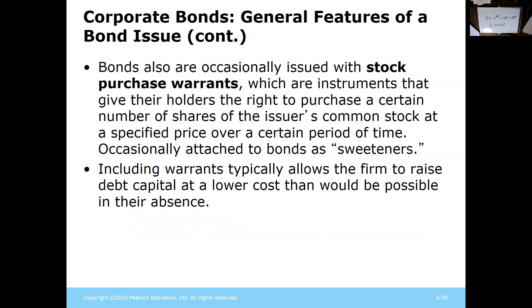Sometimes there's a stock purchase warrant, where holders can purchase a certain number of shares at a certain price over a period of time. You hold the bond but also get a discount on purchasing shares of stock. This benefits the bondholder with discounted shares, and benefits the company because investors hold bonds and also invest in stock — raising more money without the full additional costs of a separate stock issuance.